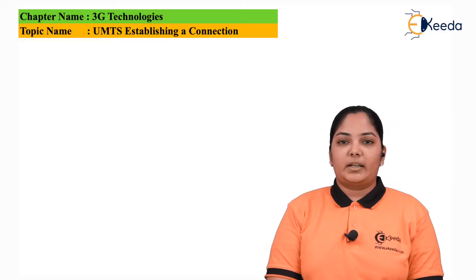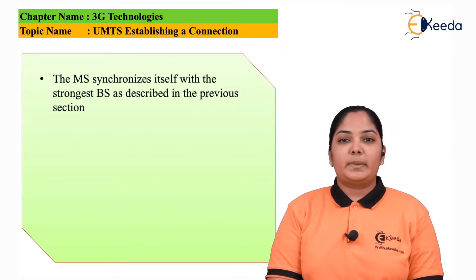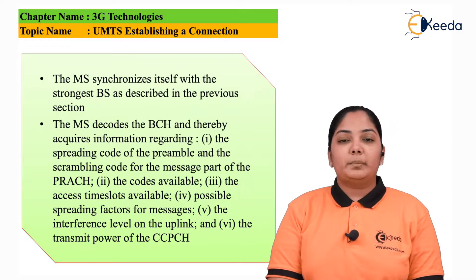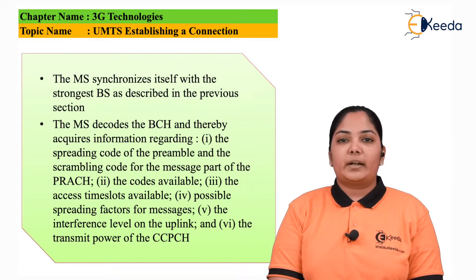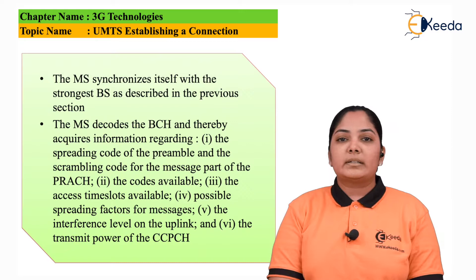Establishing a UMTS connection: the mobile station synchronizes itself with the strongest base station, and this is done by knowing the power levels of the base station being transmitted to the mobile station. The MS decodes the BCH (Broadcast Channel) and acquires information regarding the spreading code of the preamble, the scrambling code for the message part of the PRACH (Physical Random Access Channel).